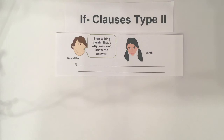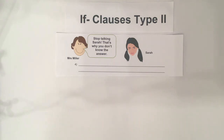Sarah is always talking with her neighbor during the lesson. So Mrs. Miller says: 'Stop talking, Sarah — that's why you don't know the answer.' If Sarah stopped talking, she would know the answer.